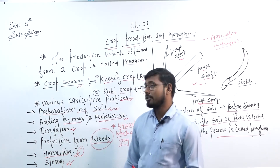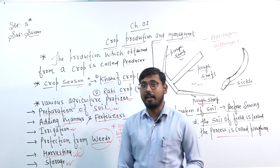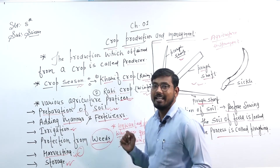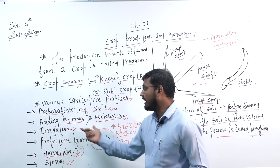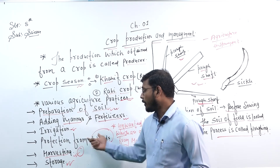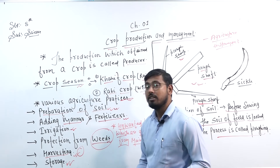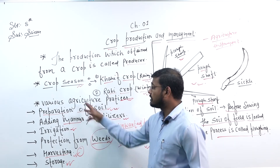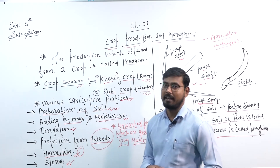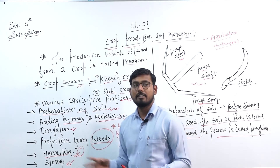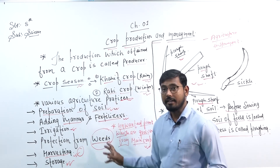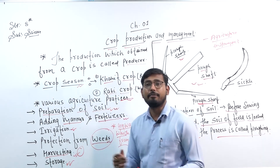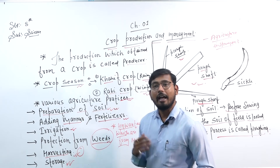So we have seen that the agriculture practices are: first, preparation of soil; second, adding manure and fertilizers; third, irrigation; fourth, protection from weeds; fifth, harvesting; and sixth, storage. These are the various agriculture practices which are involved in our agriculture.